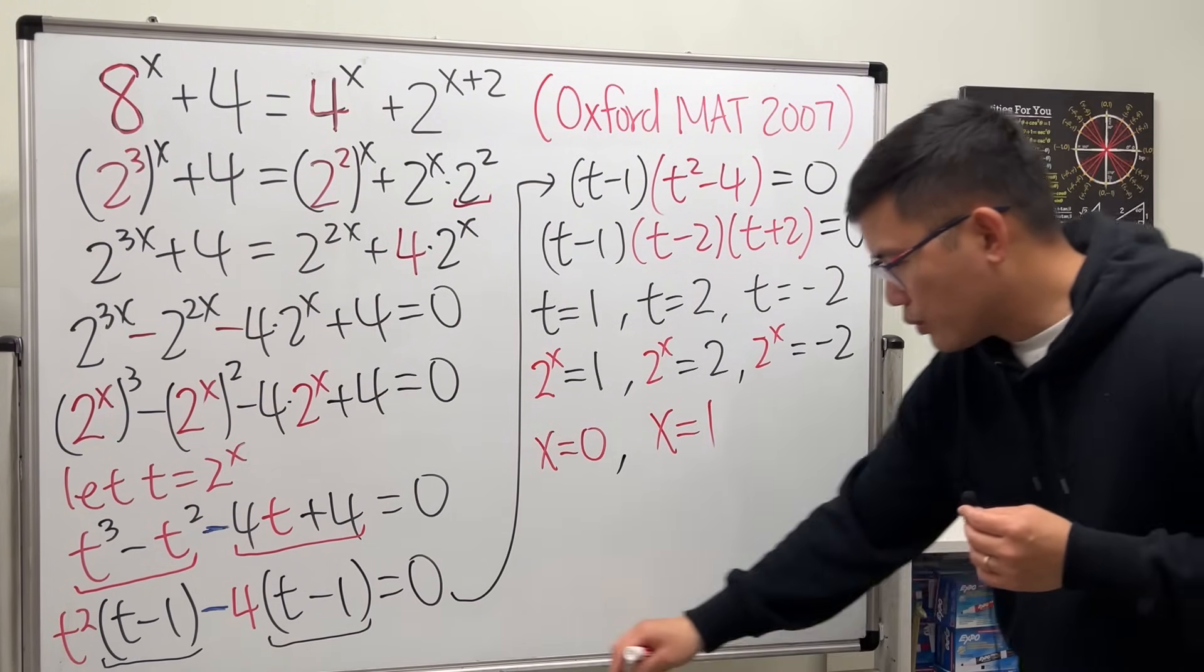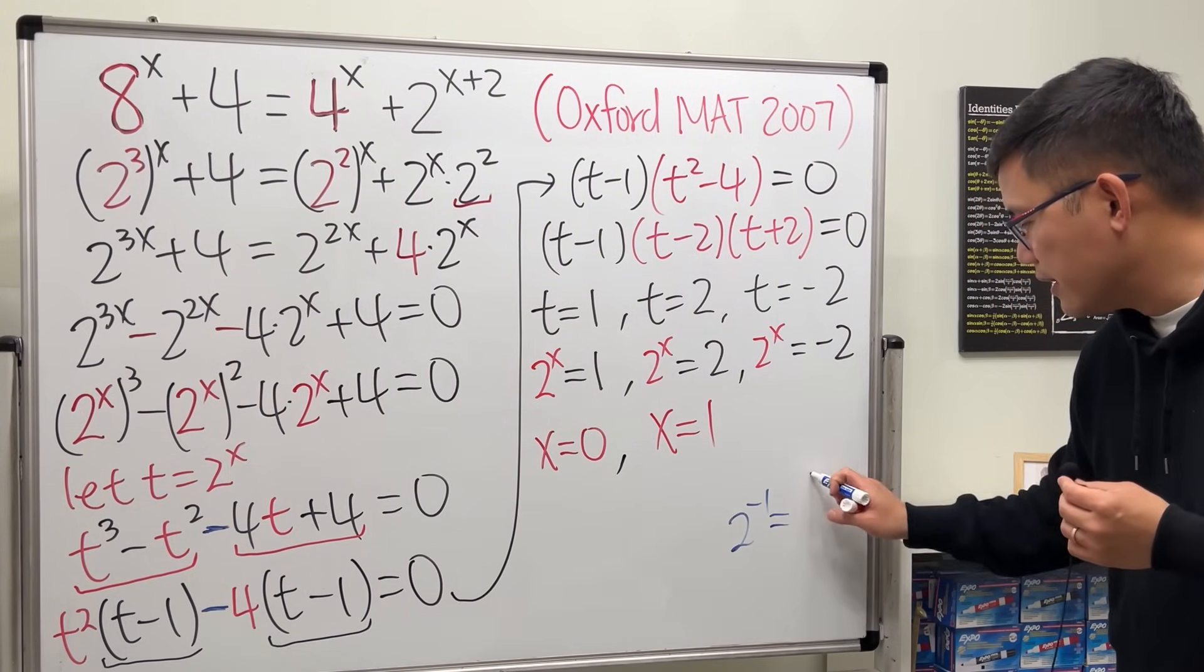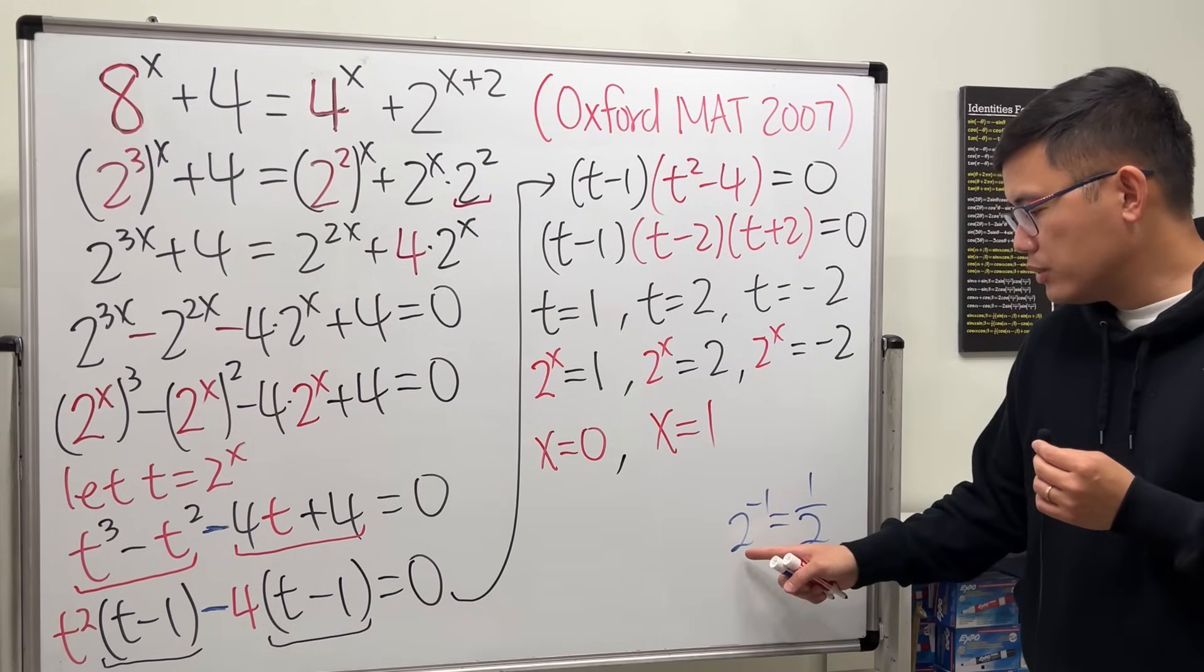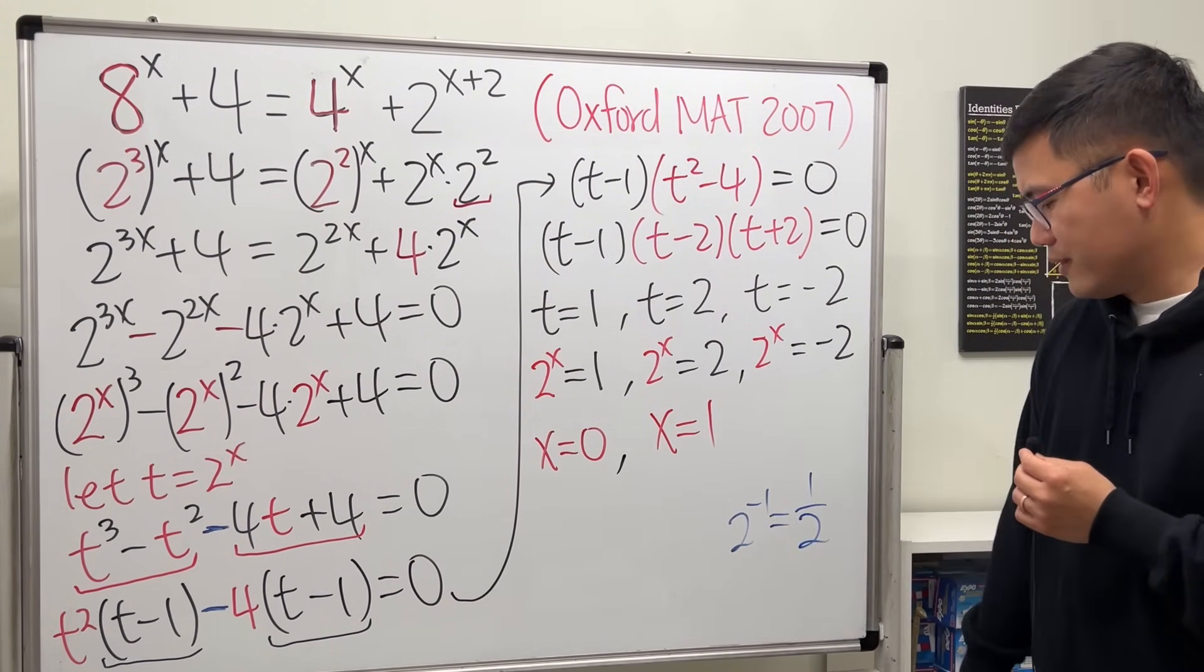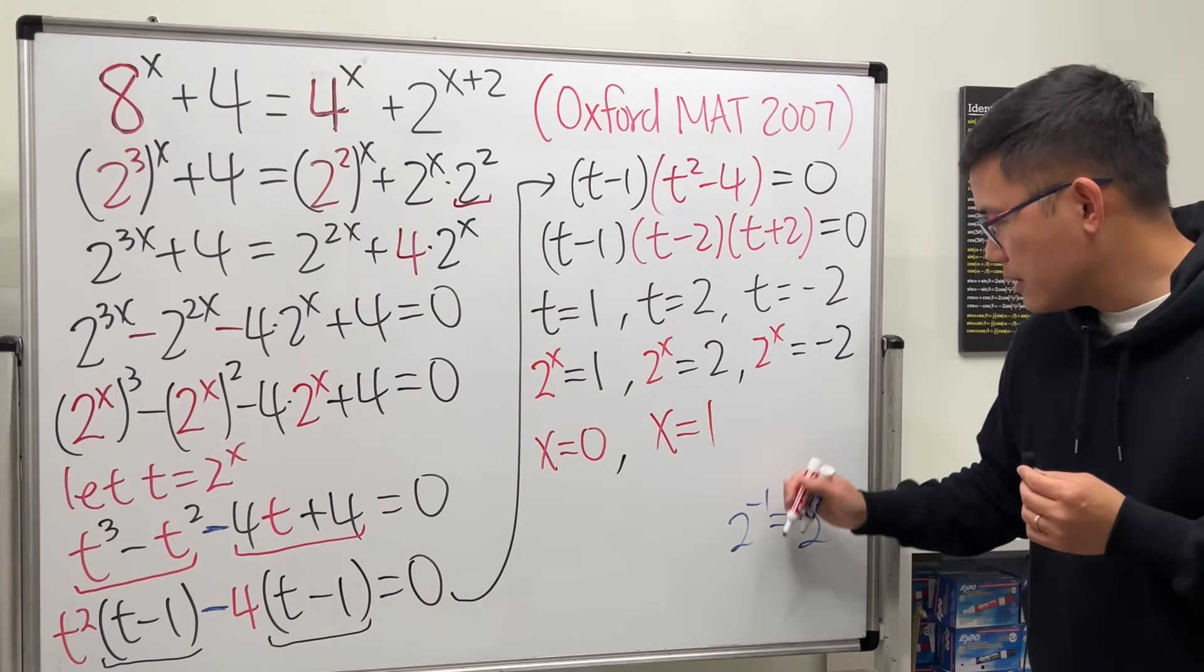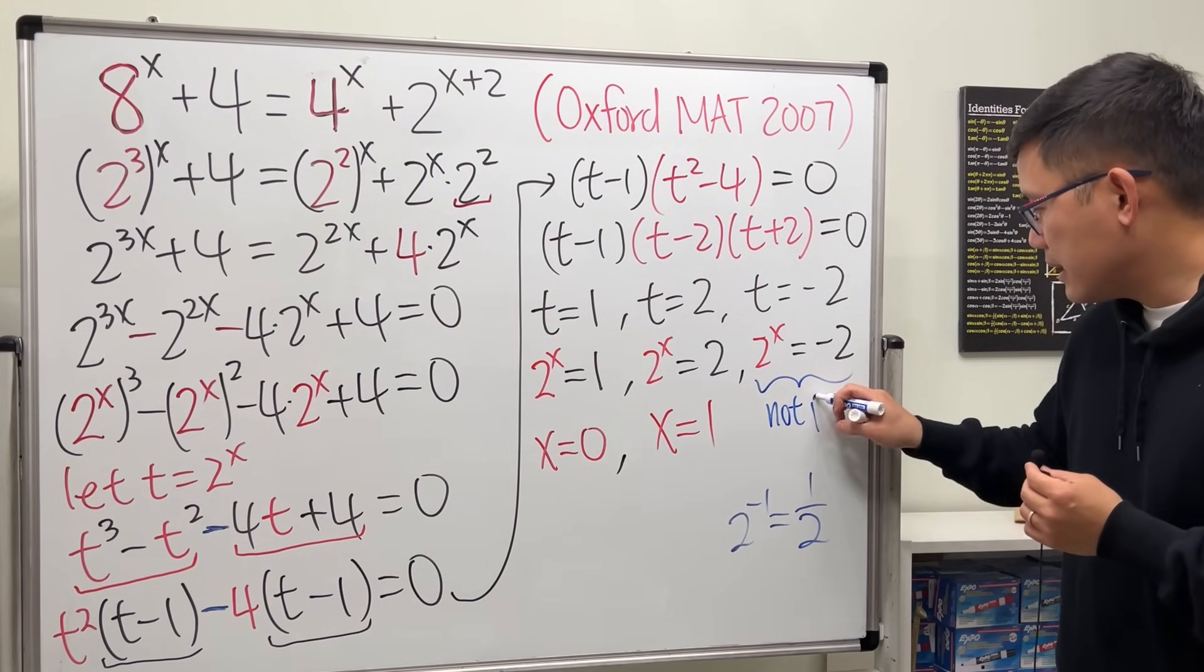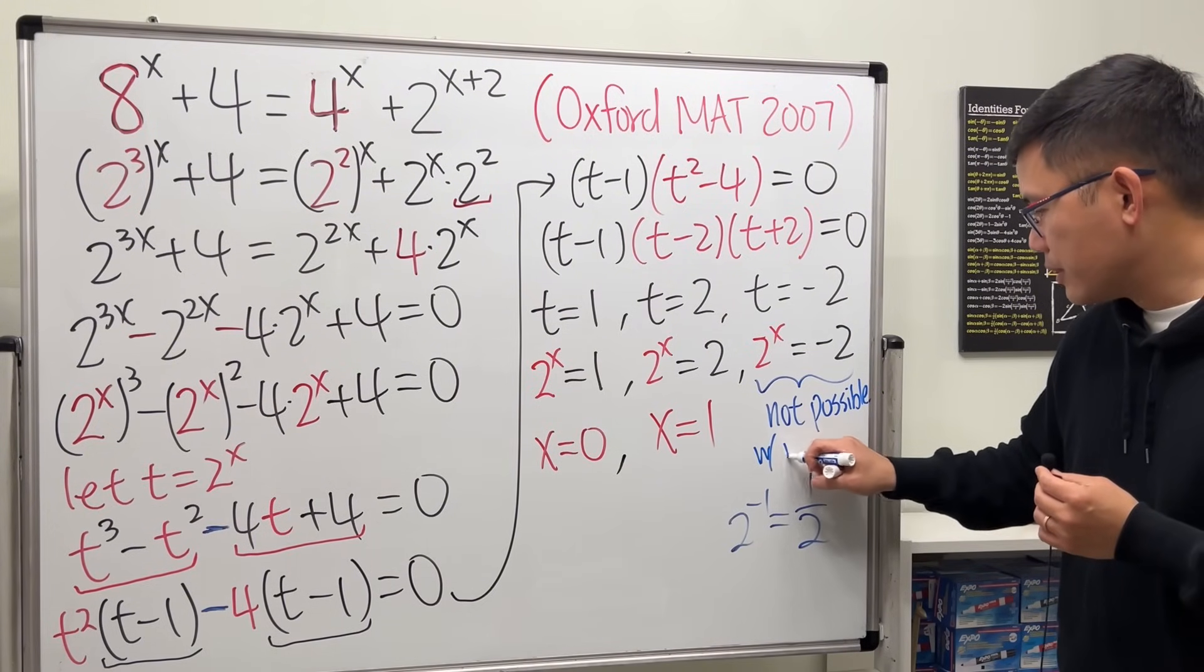The answer is not negative 1, though. Be careful. This right here, if we have 2 to the negative 1, it actually gives us 1 over 2. Negative power tells you to divide. 1 over 2 to 1 over 2. So, this right here, in fact, it's not possible. Not possible with real numbers.